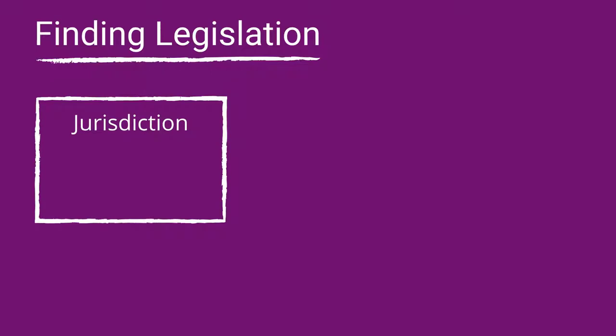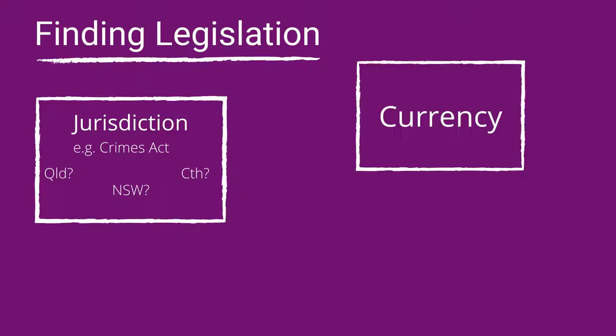One, the jurisdiction. Almost all of the states and territories have an Act called the Crimes Act, so make sure you are accessing the Act for the jurisdiction you are interested in. Two, the currency of the Act — is the version you are looking at the most up-to-date version? Have all amendments been incorporated?